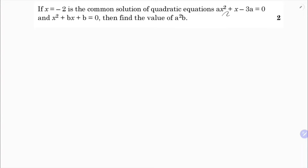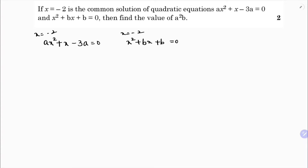x equals minus 2 is a common solution of two quadratic equations: ax squared plus x minus 3a equals 0, and x squared plus bx plus b equals 0. The common solution is x equals minus 2.